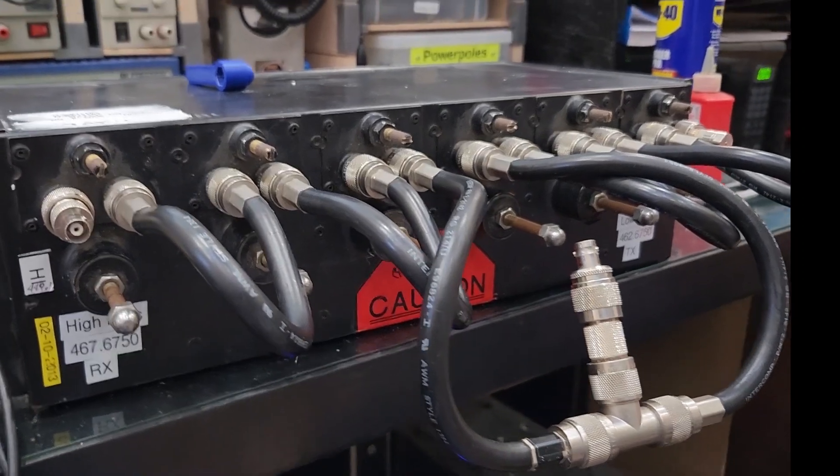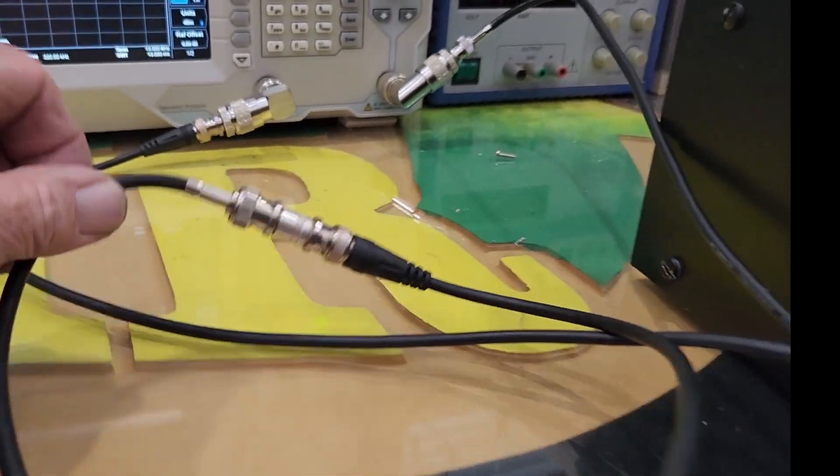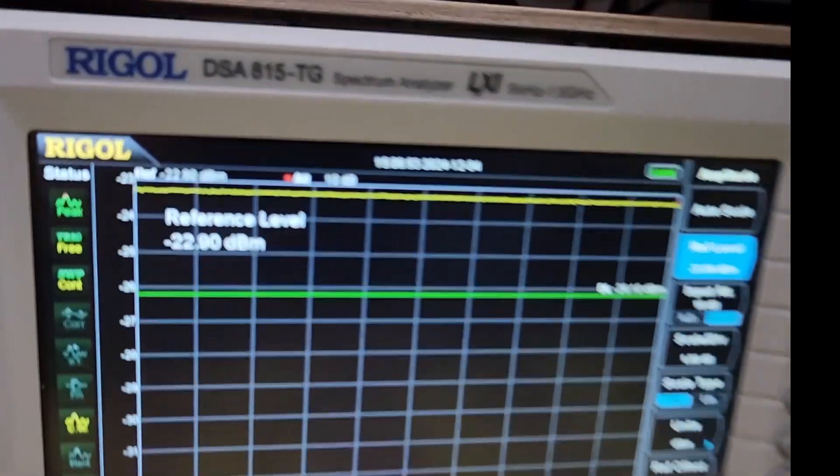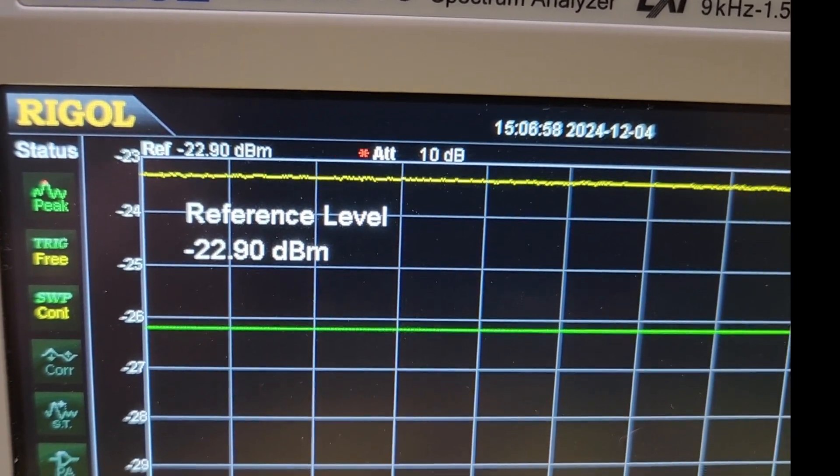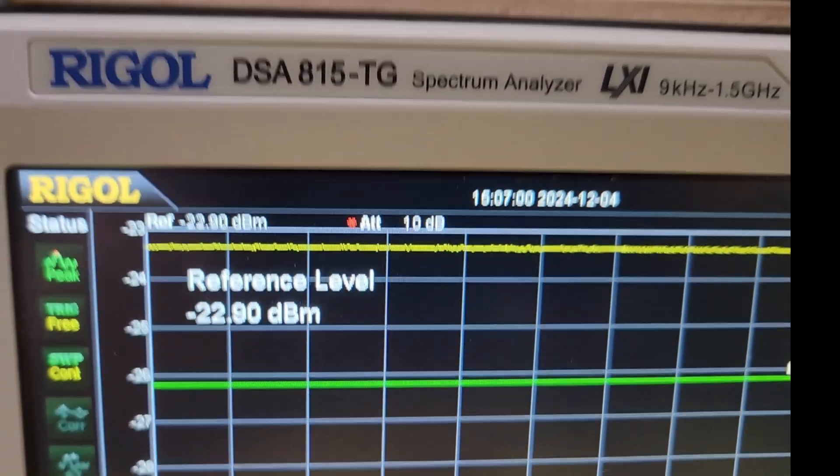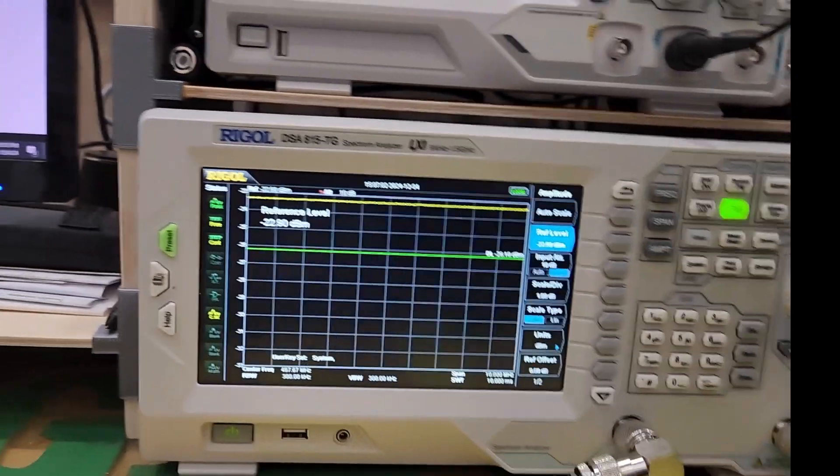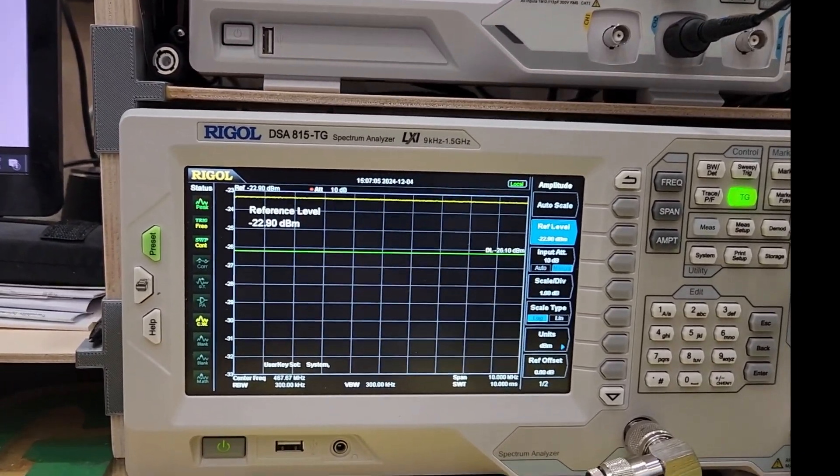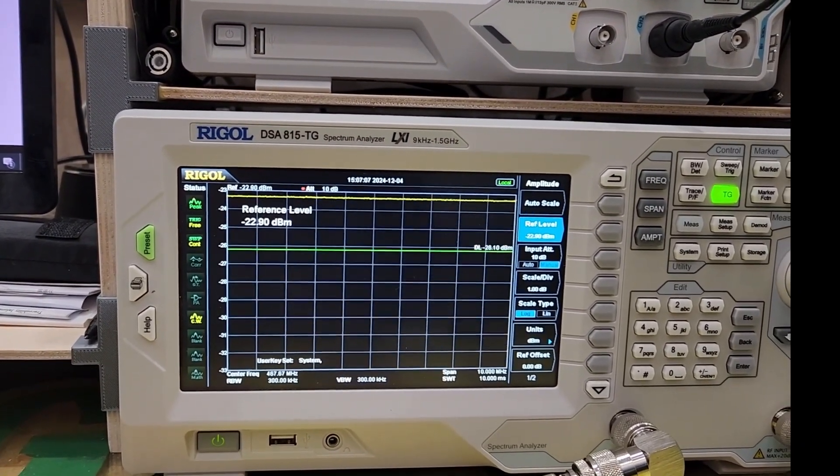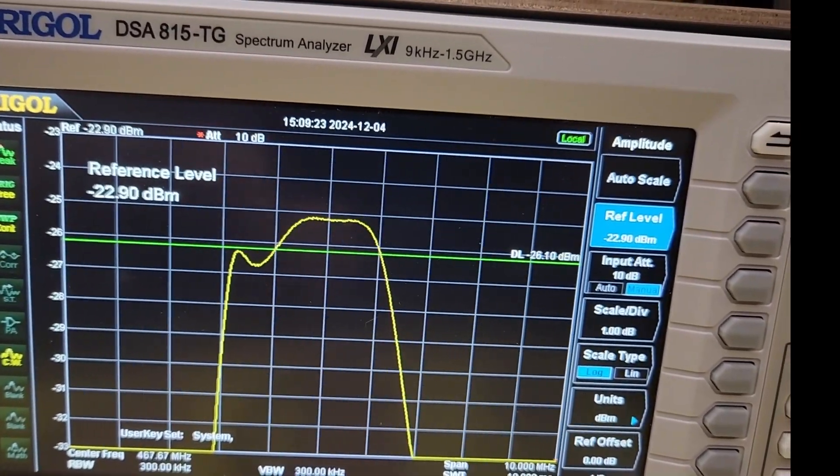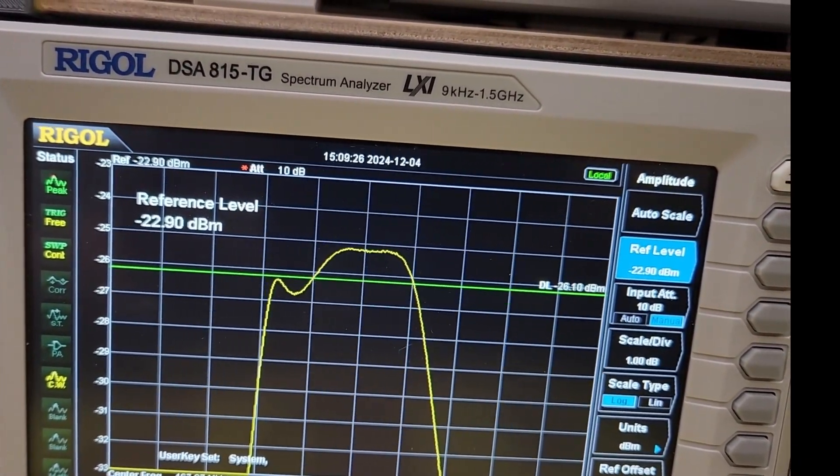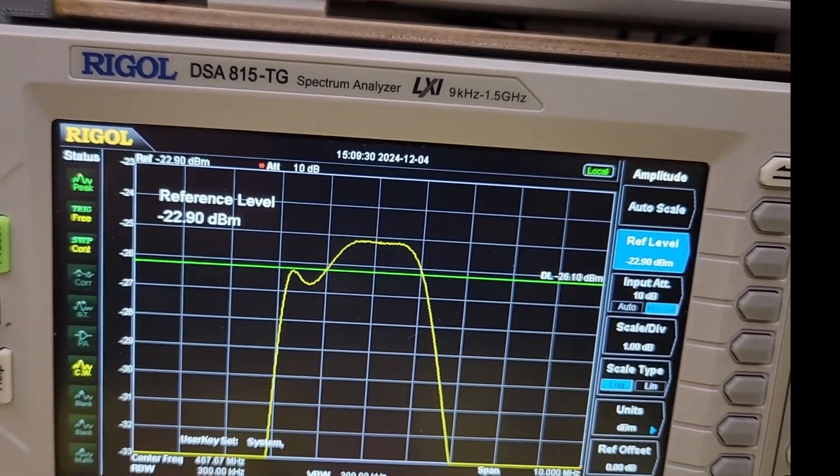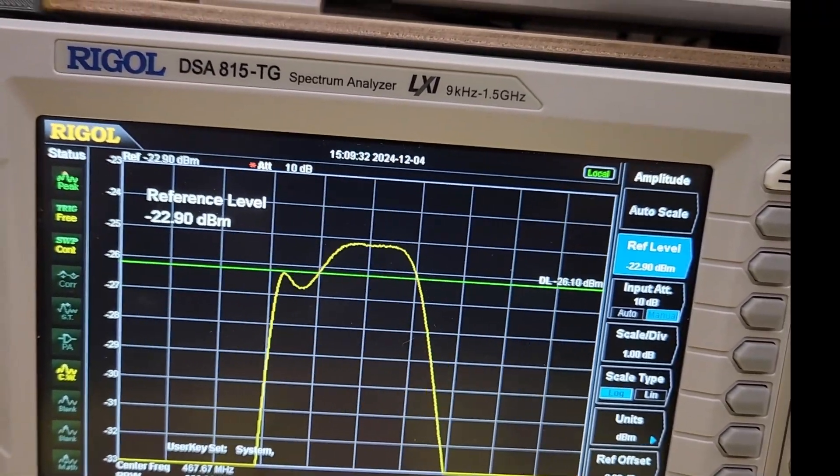I'll be back when the entire duplexer is tuned and ready for a final test. Okay, we're done, testing it as a unit here. First thing we'll do is look at the insertion loss. What I've done is I've just connected my two cables together. There's a reference line there just under minus 23 dBm. Now let's hook up the high pass side of the duplexer and look at our insertion loss. There we go, we've got about 2 dB of insertion loss. That's not bad for the 526. We're looking at this at 1 dB per division.